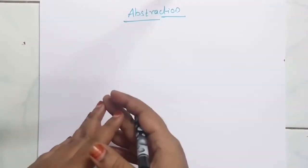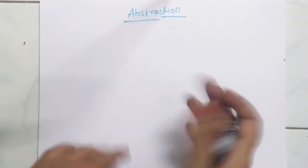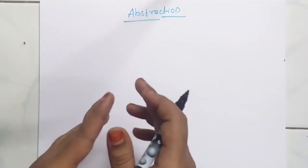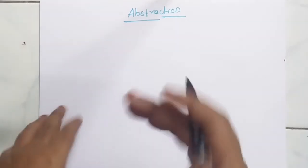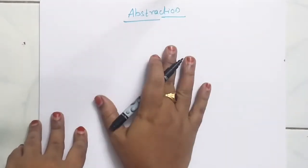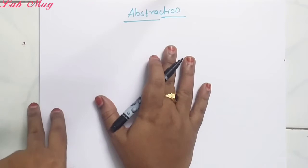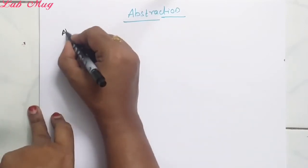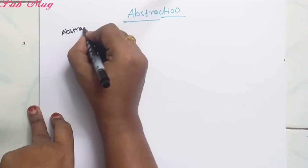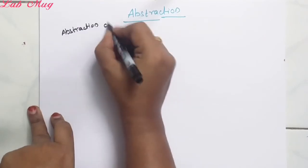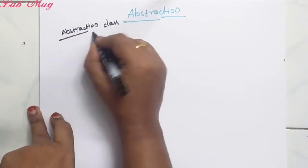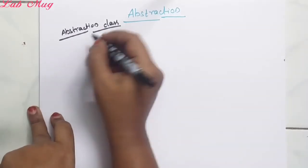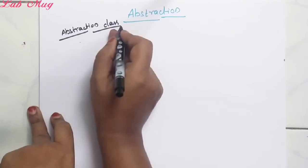Hi students, previous class lo manam data abstraction topic choosam. So today's class lo data abstraction lo the first type - abstract class. By using abstract class we can achieve data abstraction concept. So manam example program chubistam. Abstract class ki abstraction two ways lo undhi.